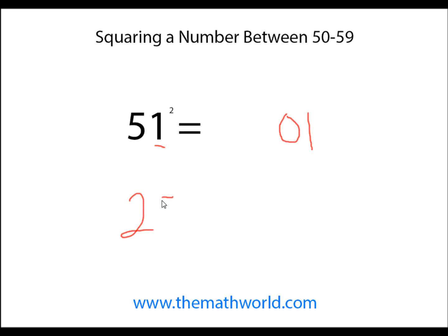And then we do 25 again plus this ones digit. 25 plus 1 is 26. So 51 squared is 2,601.